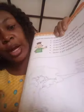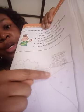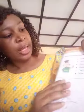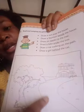Next it says 'draw a cat walking on the path' — this is the pathway leading to the house, so you can draw the cat anywhere along the path. Then 'draw a girl behind the cat' — so wherever you drew the cat, you draw the girl behind it. And that's it for today in language.